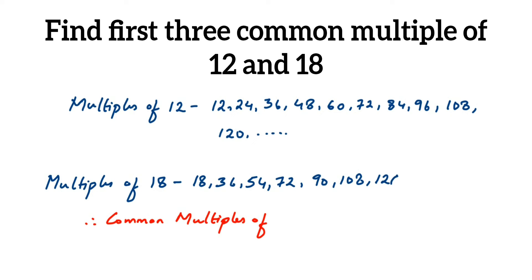So here I'm not going to write down up to 180 because I've got the common multiples here itself. If you got the common multiples, you can stop. For 12, the 120 is the last I have written, and for 18, 126 is where I've stopped. Let me find out if I get the common multiple.